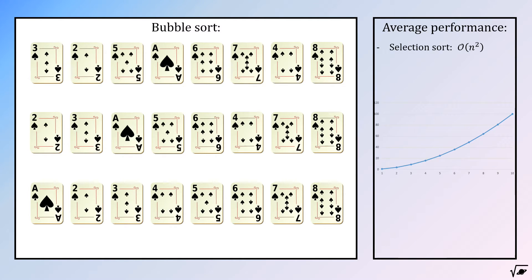But although this algorithm may feel a bit faster than selection sort, bubble sort also has an average performance in the order of n squared. There has to be a faster way, right?